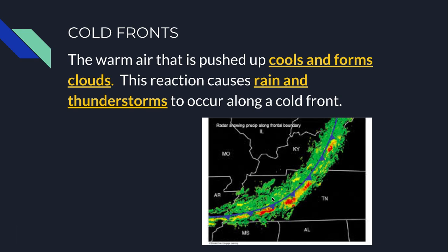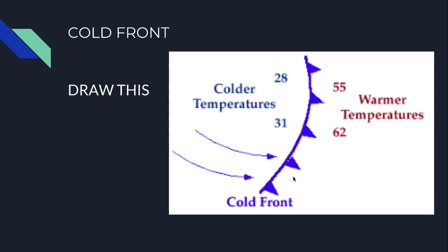At a cold front, cold air moves in and warm air moves out. The warm air rises, causing rain and thunderstorms. Right after this cold front moves in, the air behind it is much colder. In your notes you have a box that says 'draw a cold front' — this is what I want you to draw.